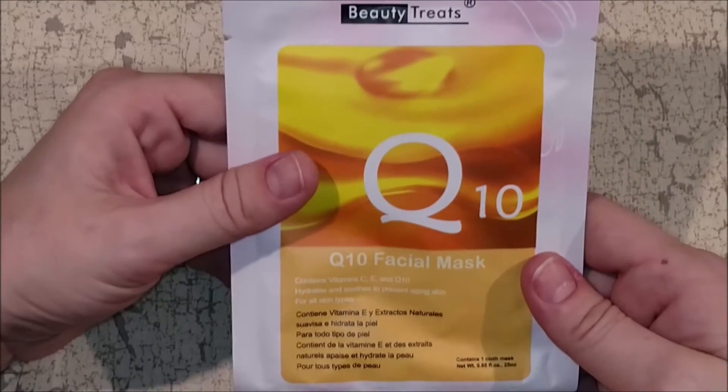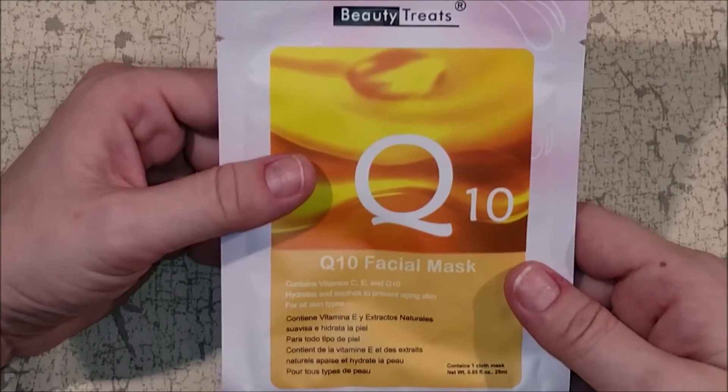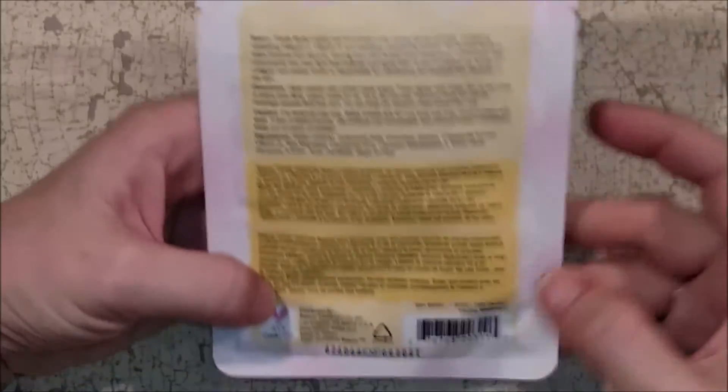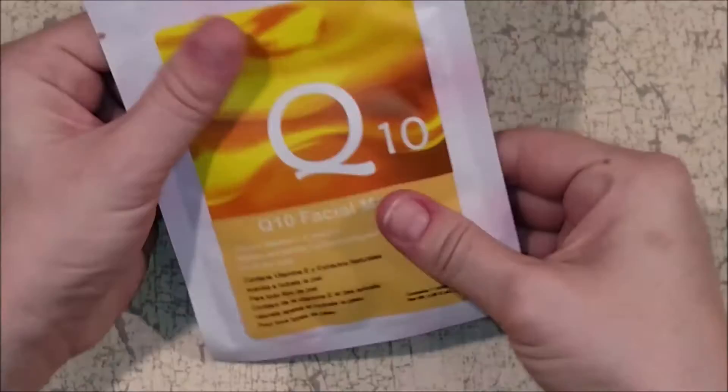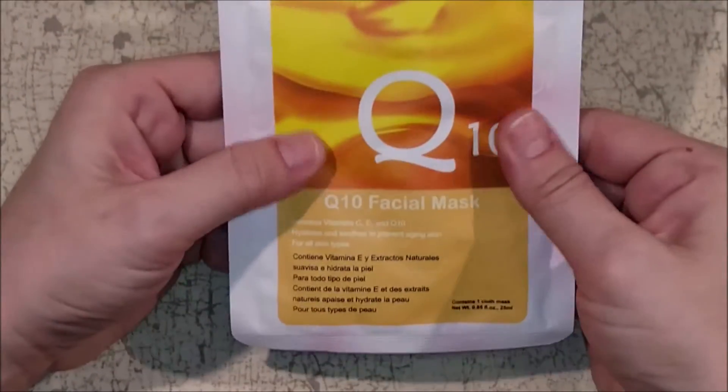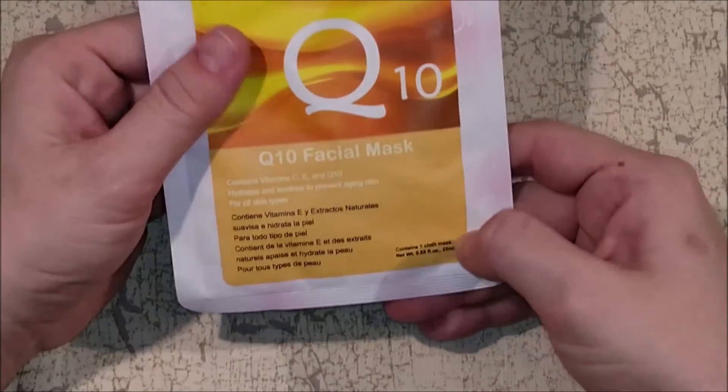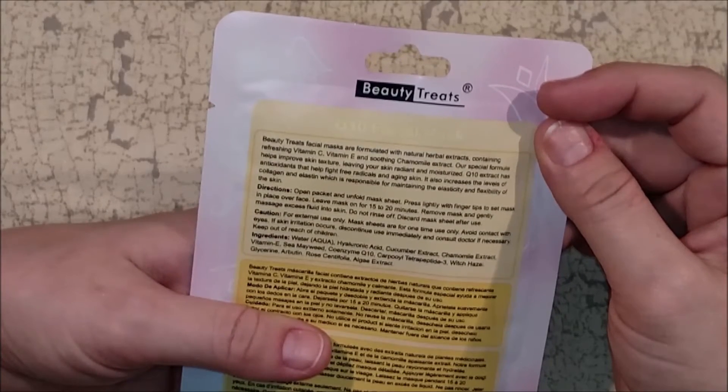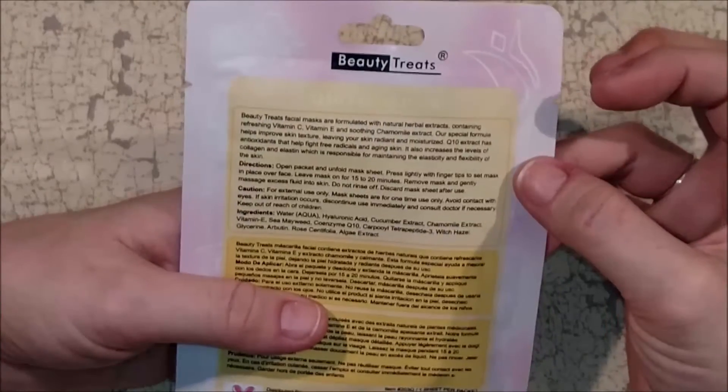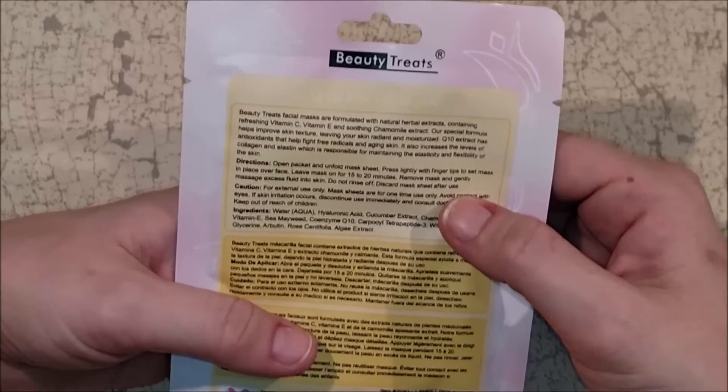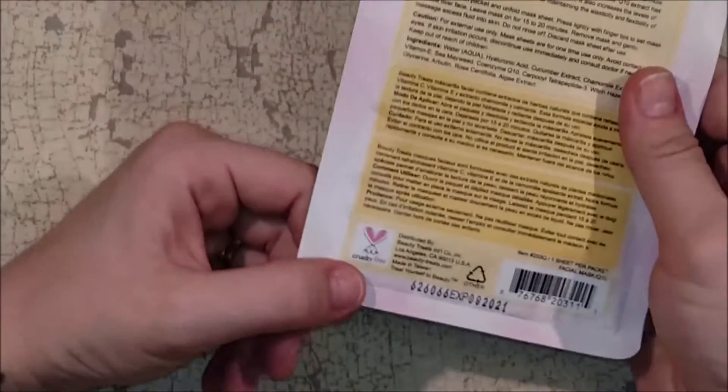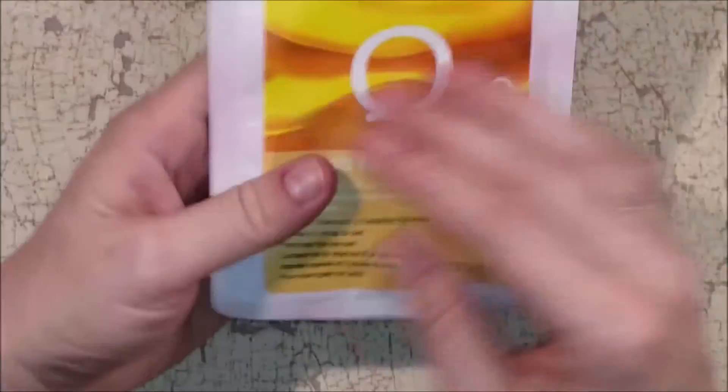One is this here, which is a Q10 facial mask. Contains vitamin C, E, and Q10. Hydrates and soothes to prevent aging skin for all skin types. This, I'm pretty sure it is a sheet. Yep. One sheet mask. So, this is like super thick. Like, I can feel all of the... Oh, it says that this is a cloth mask. Open packet, unfold mask. Press lightly with fingertips to set mask in place over face. Leave mask on for 15 to 20 minutes. Remove mask and gently massage excess fluid into skin. Do not rinse off. Discard mask sheet after use. And it says cruelty free. So, yeah, I'm kind of interested to give that a go.